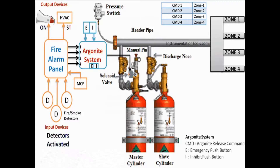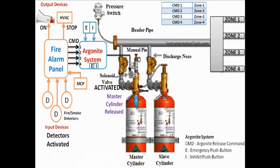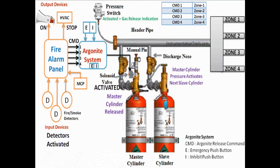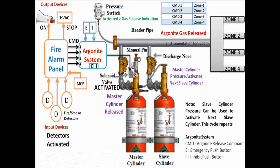The argonite system receives the release command from the fire alarm panel and waits for some time before releasing the argonite cylinders — typically from 30 to 60 seconds. Sometimes we receive false fire and smoke detector alarms; in that case we have to inhibit the argonite release command. Inhibit means stop the action. Inhibit push buttons are generally installed near the argonite system or respective zones, and are also provided on the argonite panel.